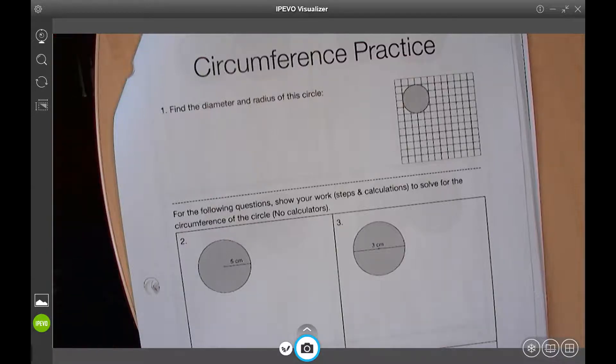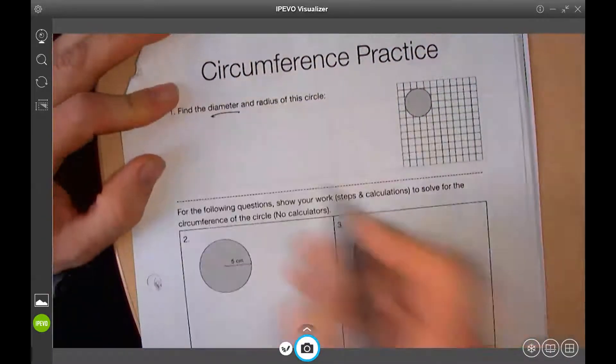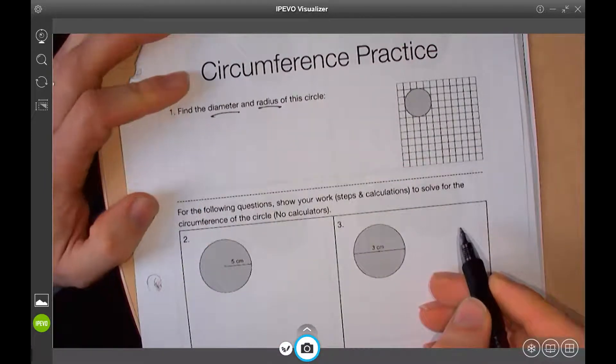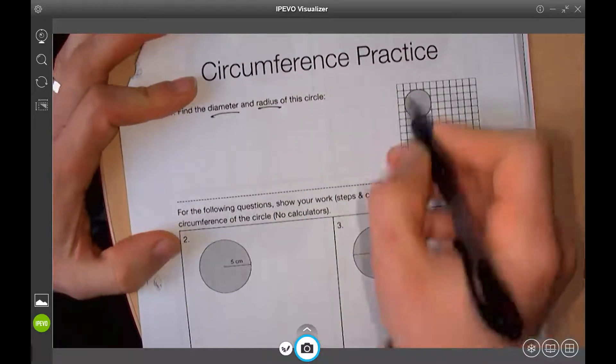Okay, so here's a little help on this section. I don't want to take too much of your time, but find the diameter and radius of this circle. So, diameter is all the way across.